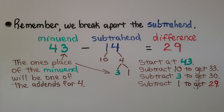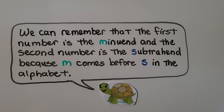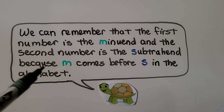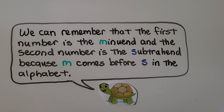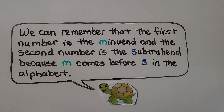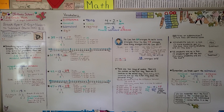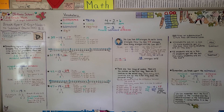Remember, we break apart the subtrahend. We can remember that the first number is the minuend and the second is the subtrahend, because M comes before S in the alphabet — minuend, then subtrahend. If any of this was confusing, click the description and go back to watch lesson 5.1, then rewatch this lesson. Our next lesson is 5.3, where we're going to model regrouping for subtraction. I hope I'll see you there. Bye!